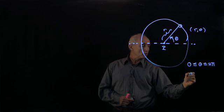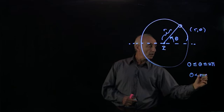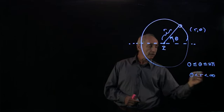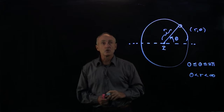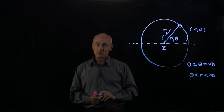The variable r is always greater than 0 and can go to infinity. So this is our polar coordinate system.